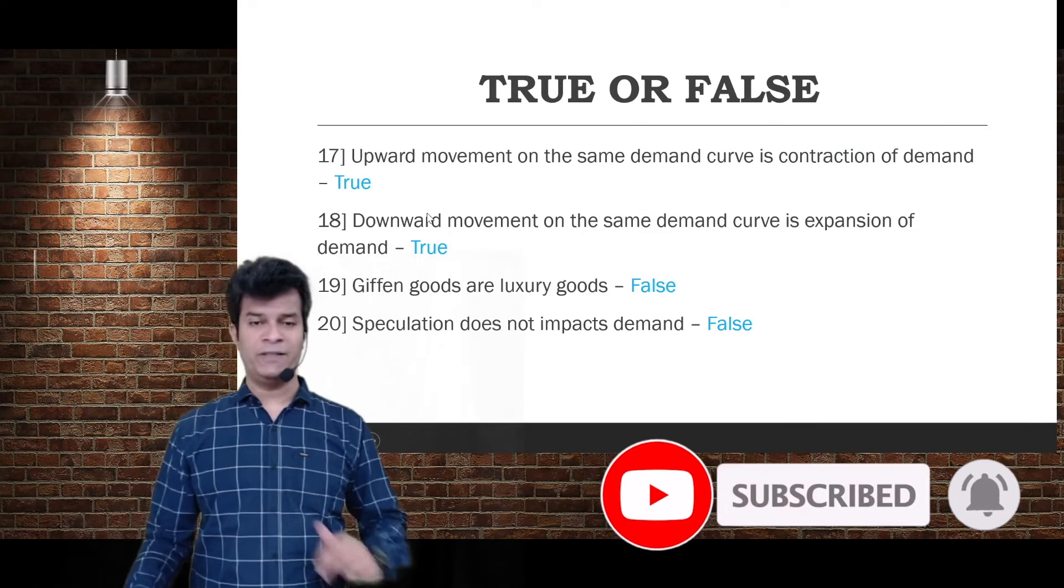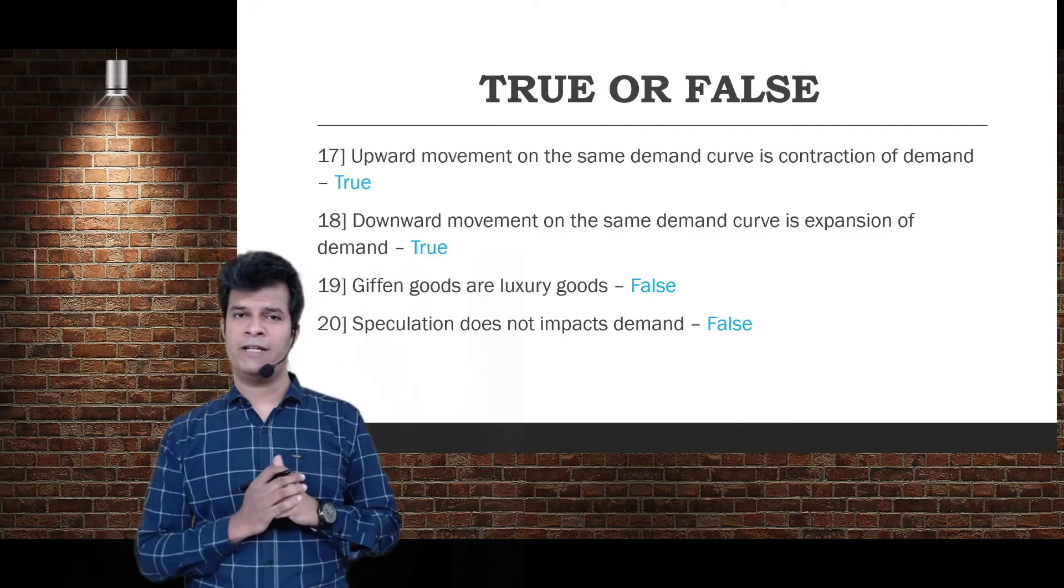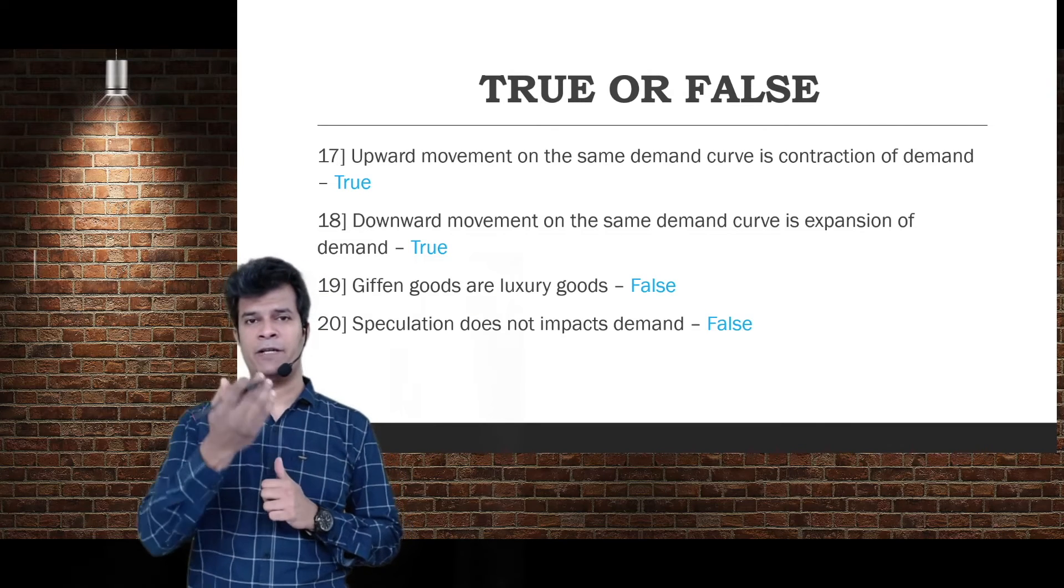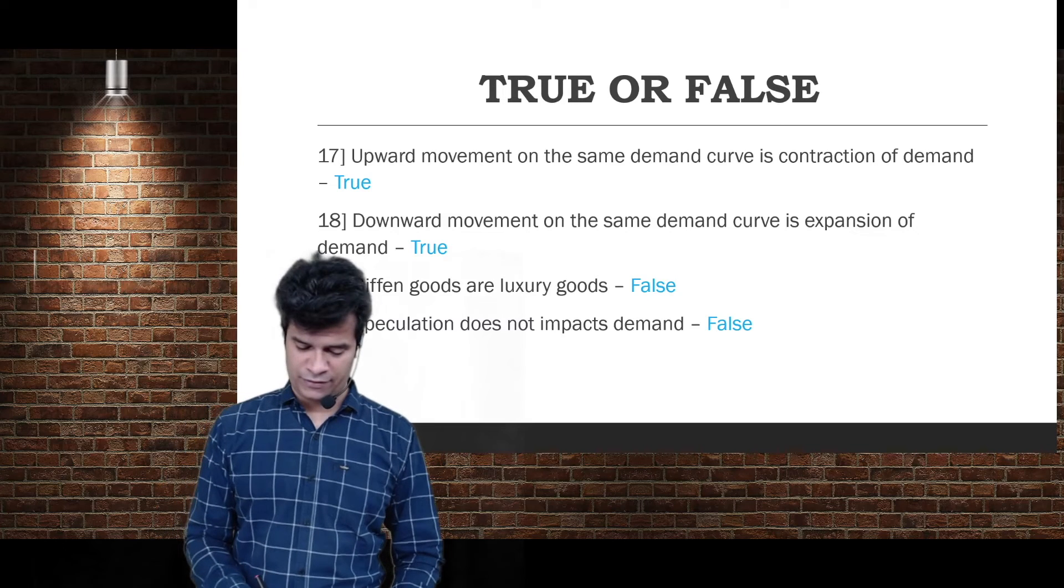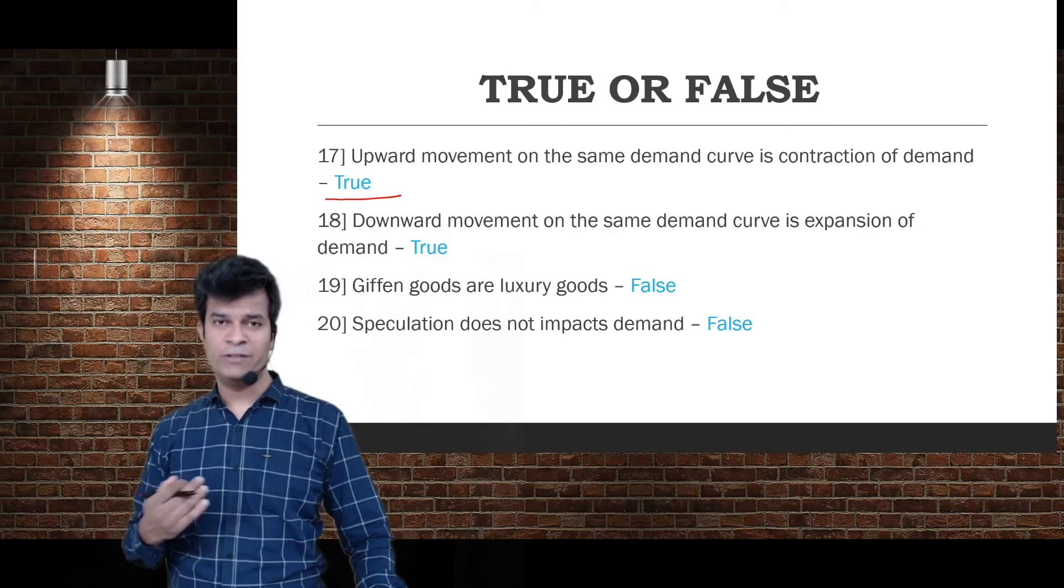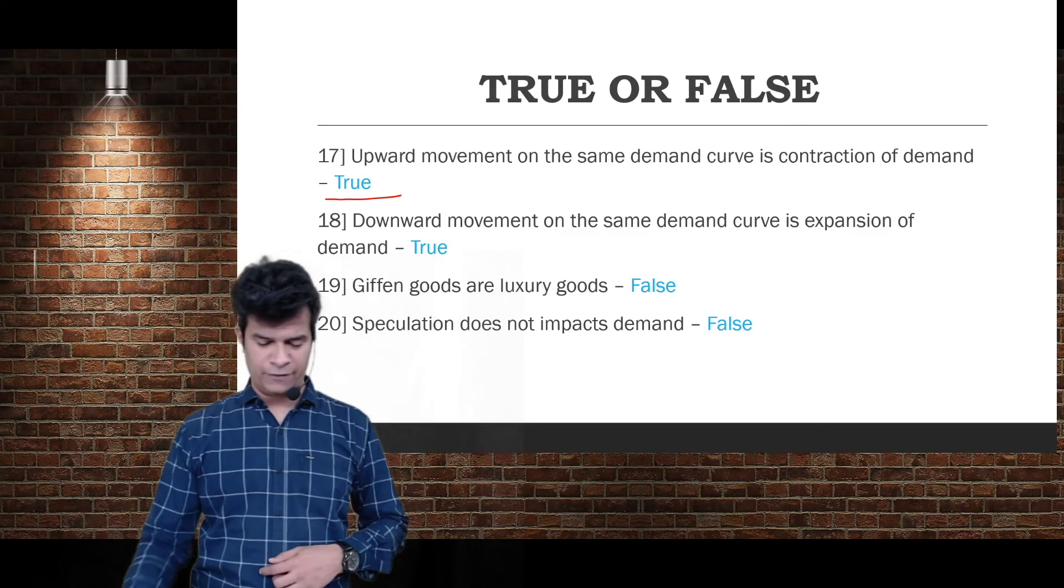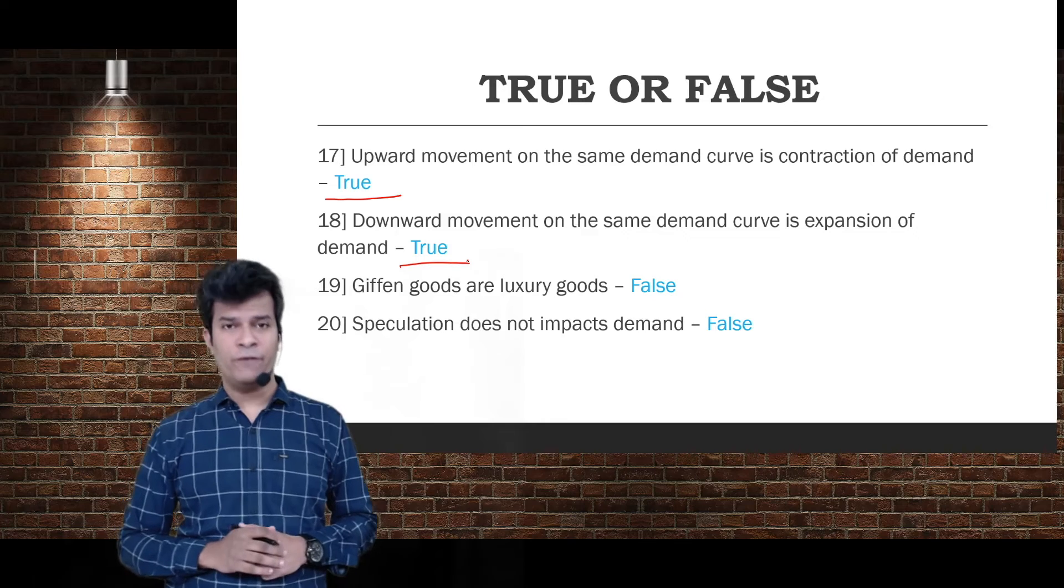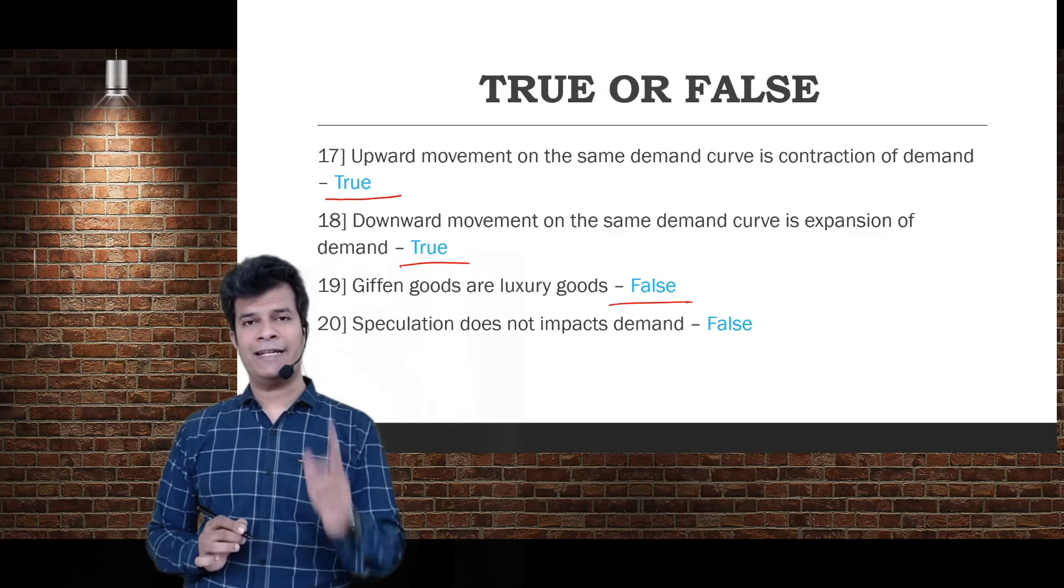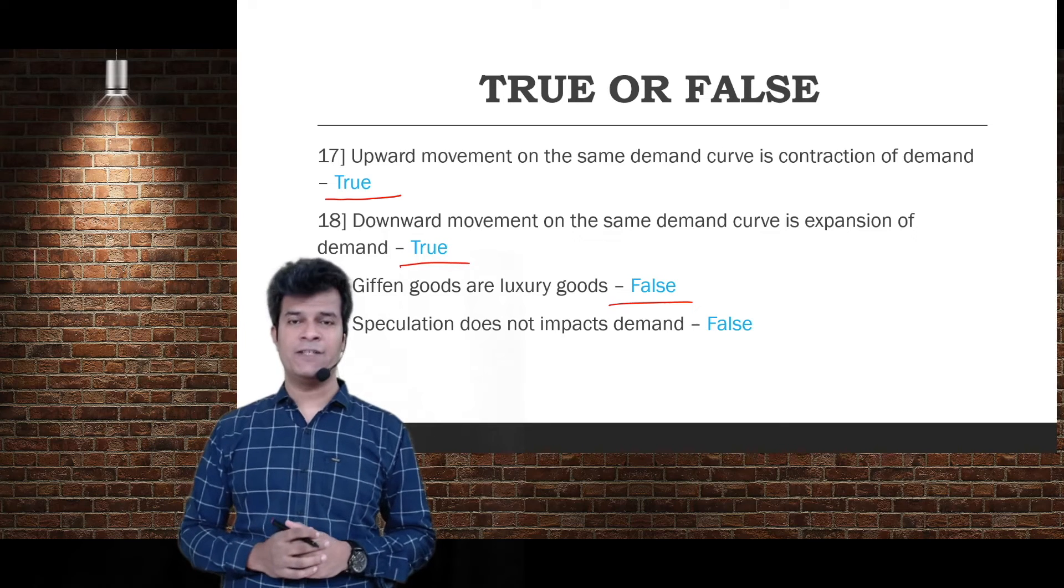Upward movement on the same demand curve is contraction of demand - true. Downward movement is expansion. Giffen goods are luxury goods - false, Giffen goods are in the category of inferior goods, not luxury goods. Speculation does not impact demand - false.